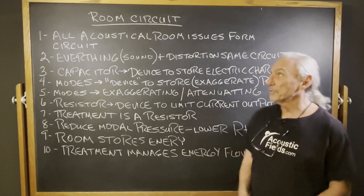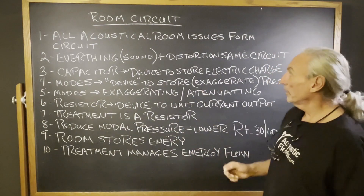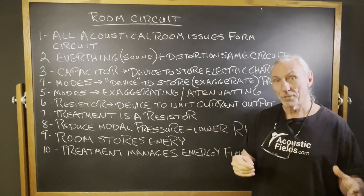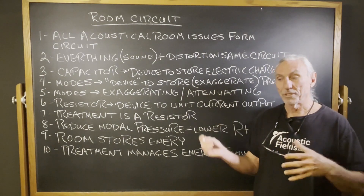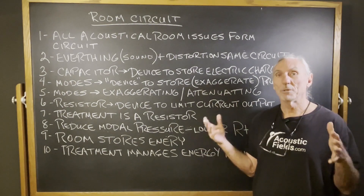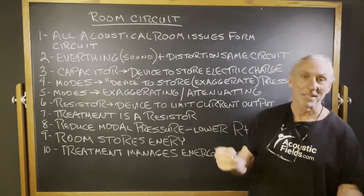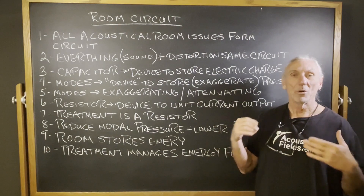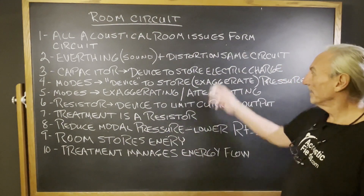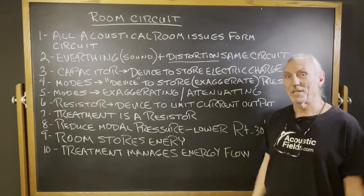Hi everyone, Dennis Foley from Acoustic Fields. Today we're going to talk about the room as an electrical circuit. All acoustical room issues kind of work together to form a circuit. You've got pressure, you've got reflections, you've got room dimensions, you've got pressure levels in the room, you have noise transmission, you have rates and levels of absorption, you have attack and decay — a whole series of things going on and they're all connected together. Even the distortions are connected into the same circuit.